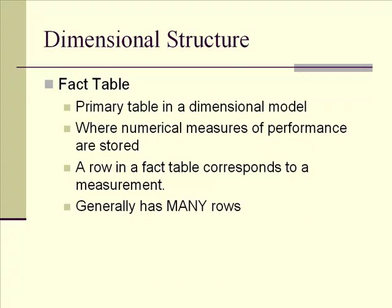The fact tables are the primary tables — the center of the star — where numerical performance measures are stored. This might be cost measures, quantity measures, and other types of numbers. A row in a fact table really corresponds to a measurement: it might correspond to the sale of one item, or it might correspond to an inventory reduction. The fact table generally has many rows.